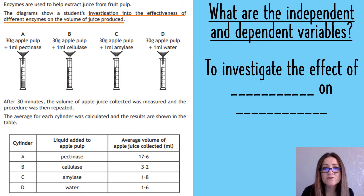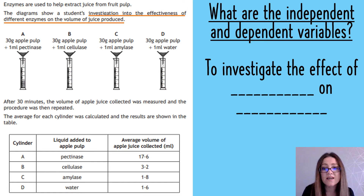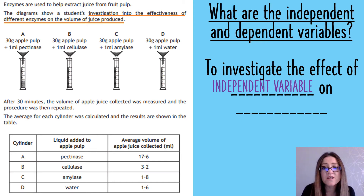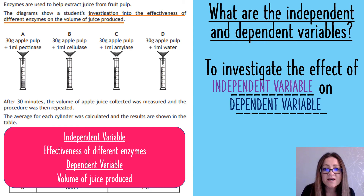Before you start answering the questions, you need to identify the independent and dependent variables. The independent variable - remember, I change the independent variable - is the one the student is choosing to change. The dependent variable is the one being measured for the results. So for this investigation, your independent variable is the different enzymes, and your dependent variable is the volume of juice produced.